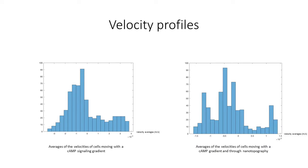And here I just have some data. Data on the right is a distribution of the averages of the cell's velocities on nano ridges. On the left is just the same thing with no nano ridges. As you can see with the nano ridges, there's a lot of motion in different directions.